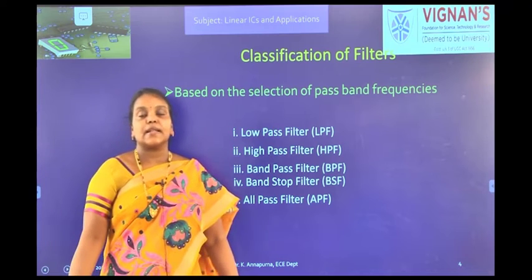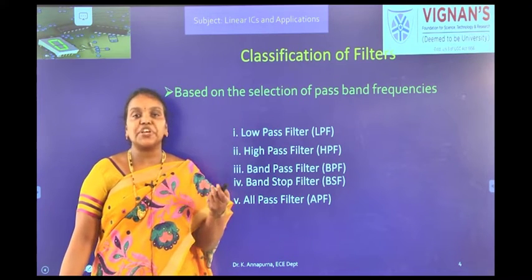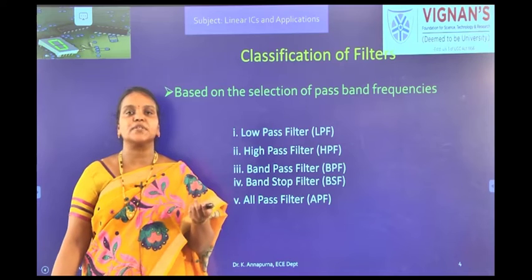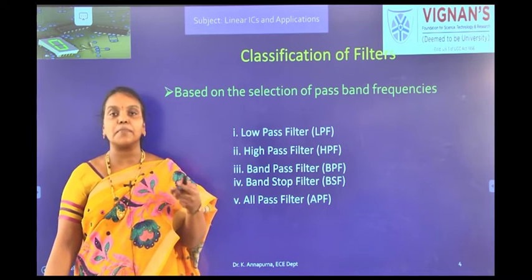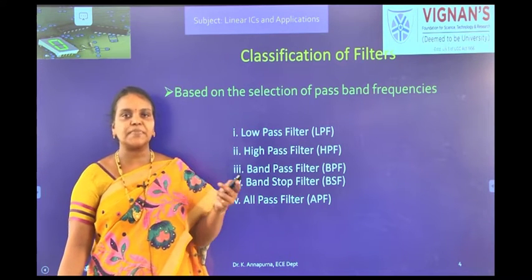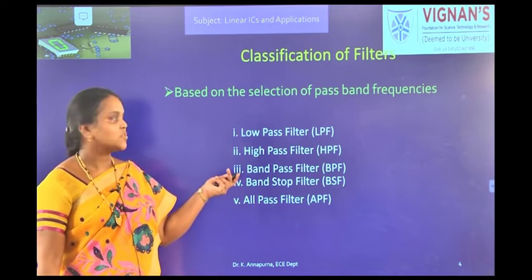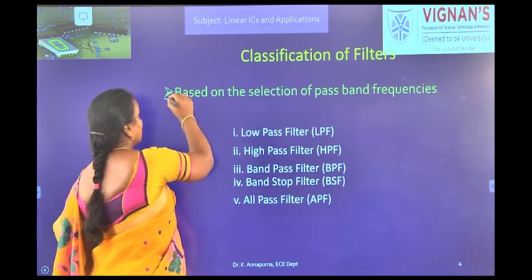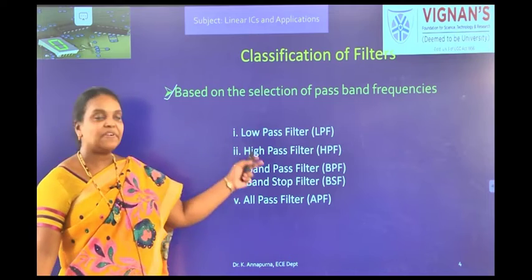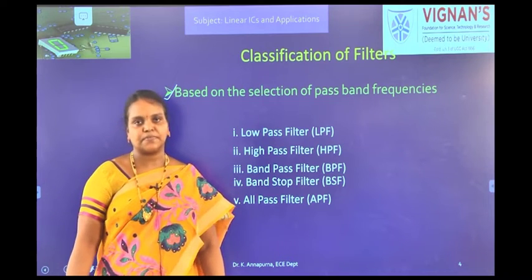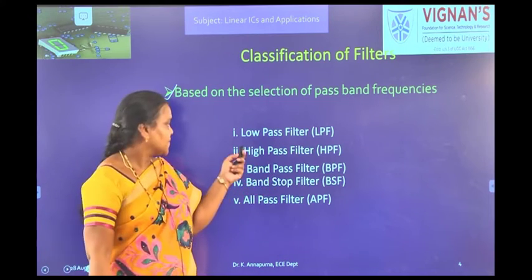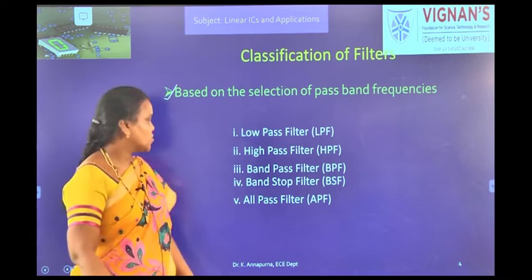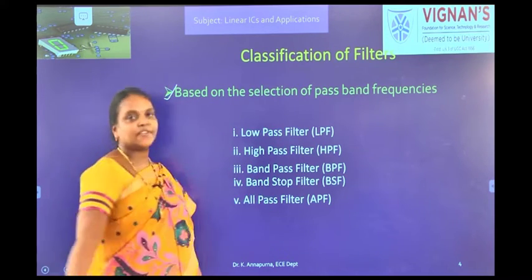Let us see the various classifications of filters. Based on various parameters, filters are classified in a number of ways. First, based on the pass band frequencies, the filters are classified into five types: low pass filter, high pass filter, band pass filter, band stop filter, and all pass filter.